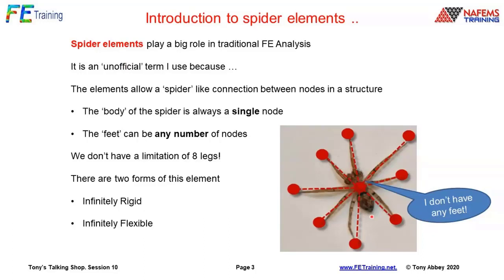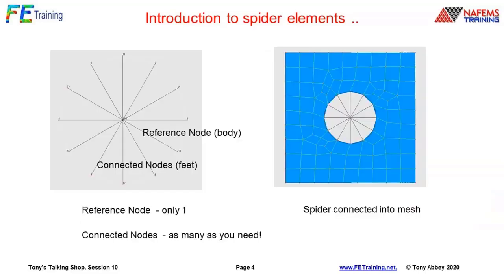You can have as many legs as you like — down to one, and the biggest number I've ever used is probably about 5,000, connecting an enforced motion of a nuclear power station. The two key forms of the element are infinitely rigid and then conversely infinitely flexible. On the right here is a spider connected into a mesh. We've got a body node — the reference node — and then connected nodes or feet. One body node in the middle, as many connected nodes as you like — that's the fundamental pattern of the element. It can be 2D or 3D.